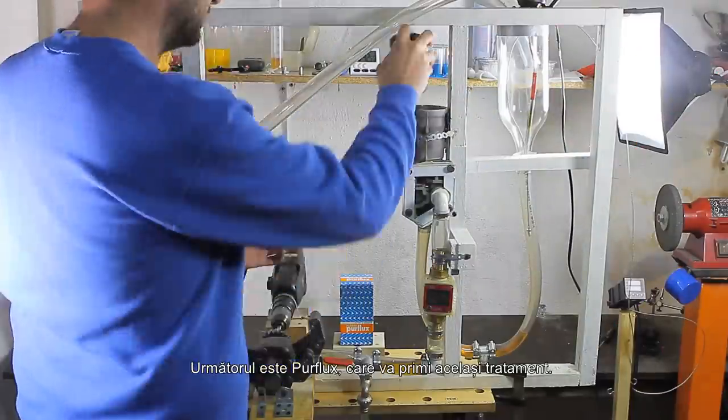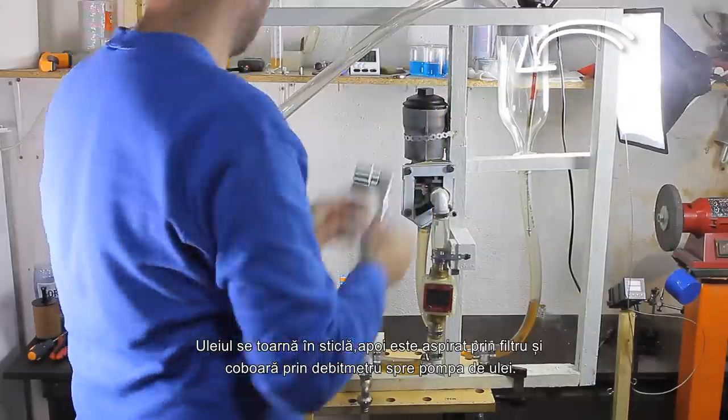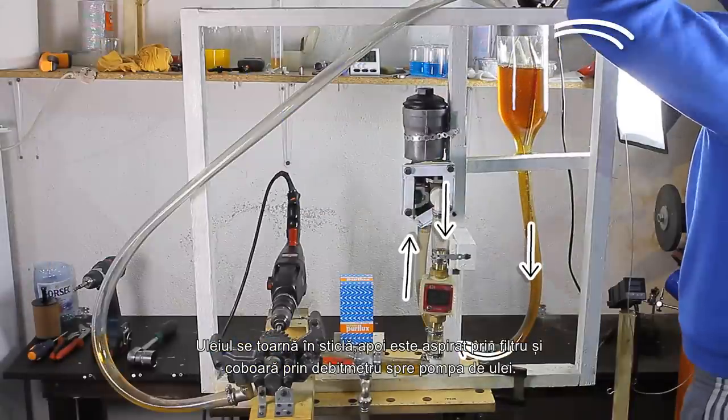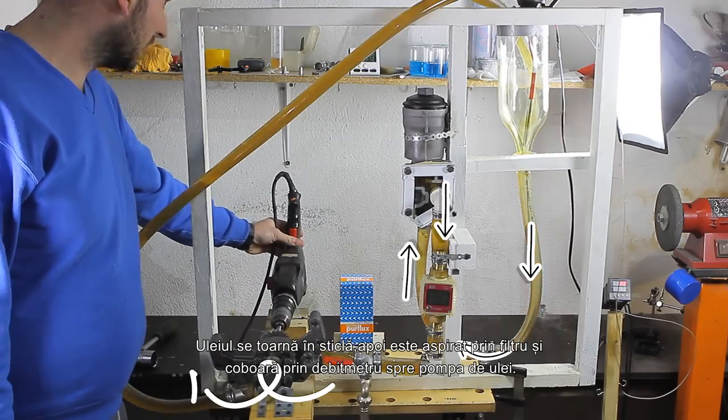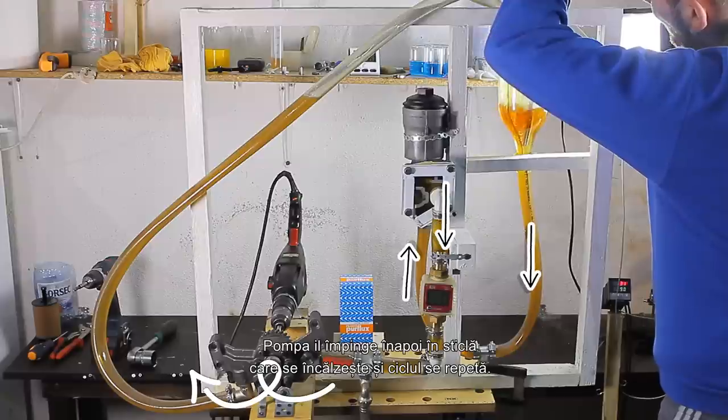Next is Purflux, which will get the same treatment. The oil is poured into the glass bottle, then it is sucked through the filter and goes back down through the flow meter towards the oil pump. The pump pushes it back into the bottle which is heated and the cycle repeats.